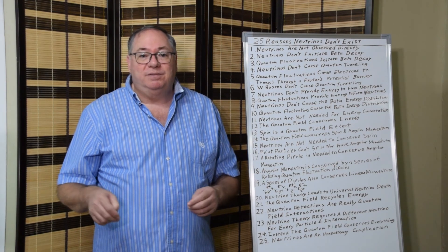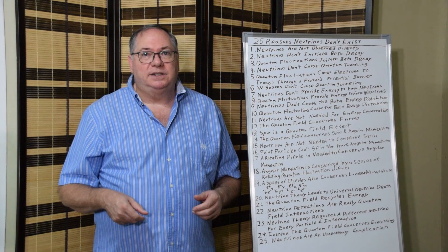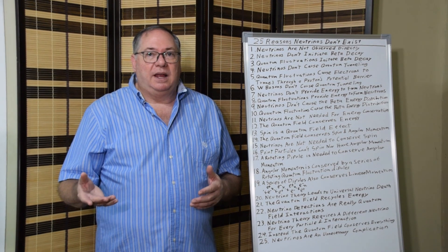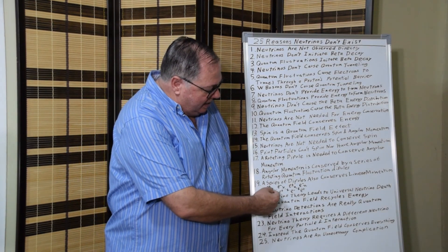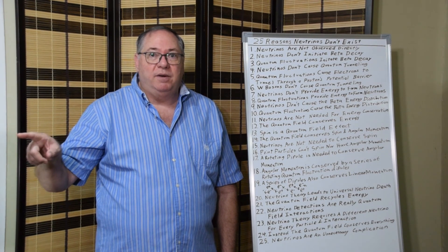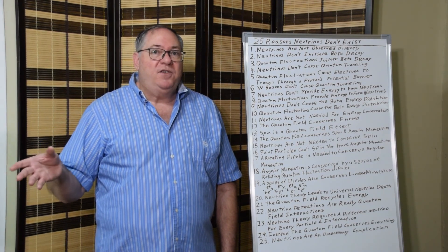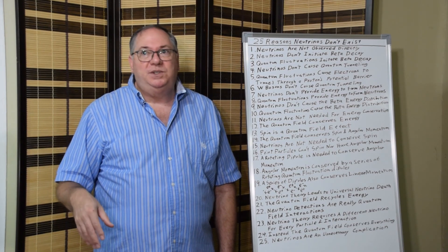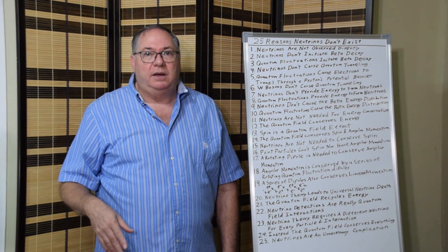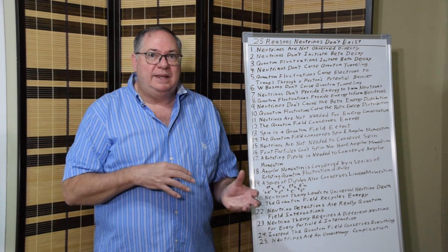Twenty-one, the quantum field recycles the energy. Twenty-two, neutrino detections are really quantum fluctuation interactions. When we do neutrino detection experiments and look for something with a certain amount of angular momentum and energy, what we're detecting is an event where quantum fluctuations are conserving energy and momentum in a particular direction. These quantum fluctuation interactions propagate through space, and occasionally something picks up on that and absorbs it — just like occasionally a photon gets absorbed, though it's more unusual for these to get picked off.